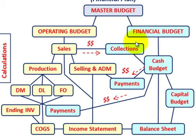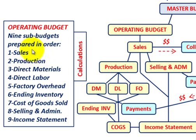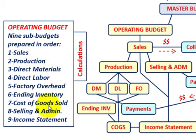Now moving to the operating budget — with the operating budget you're really going to have nine sub-budgets, and they have to be prepared in order, numbered one through nine. Number one is sales, because without knowing our sales figures we can't plan our production, and without knowing production we can't plan direct materials, and so forth.